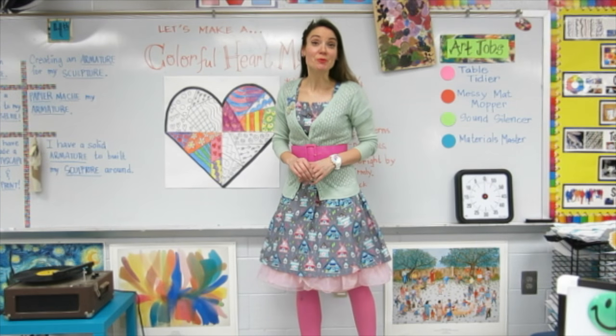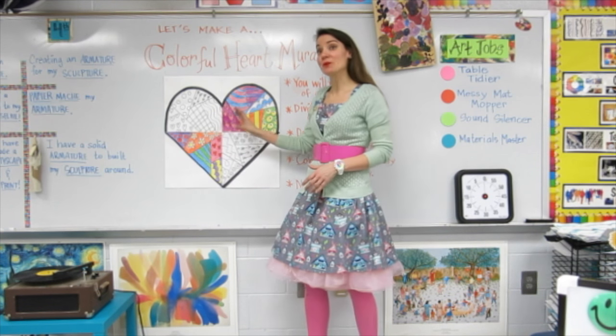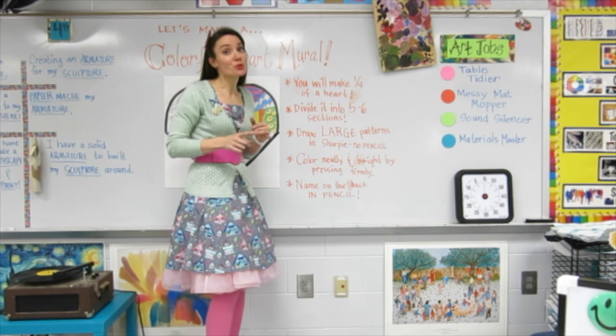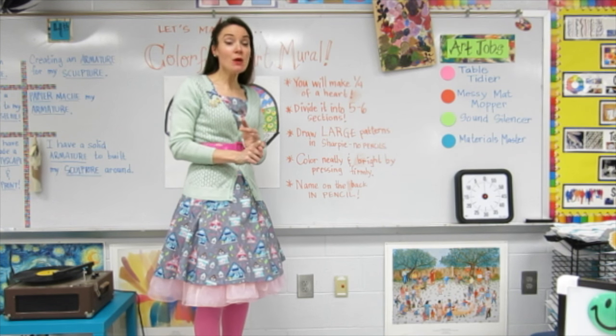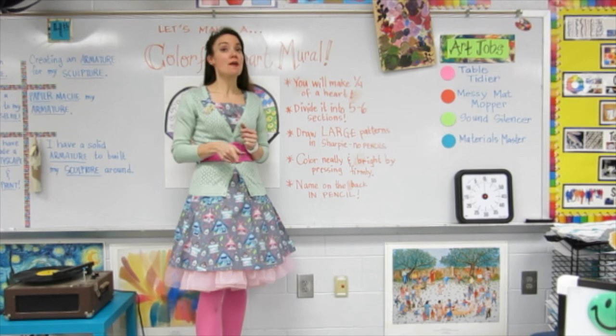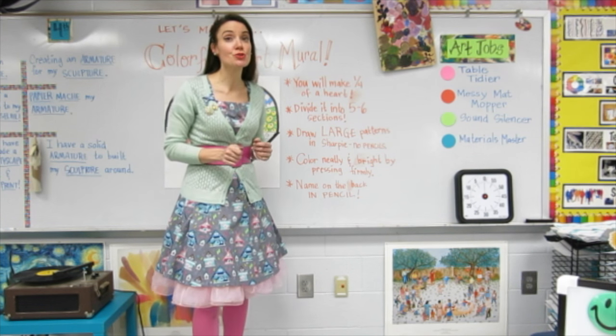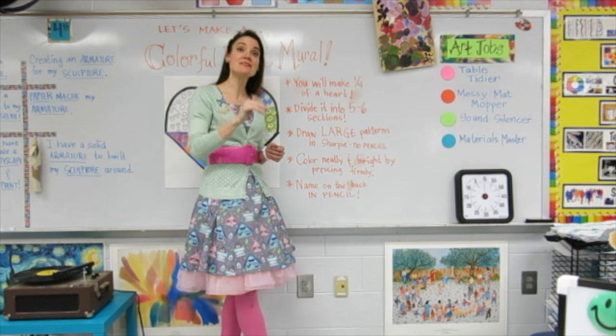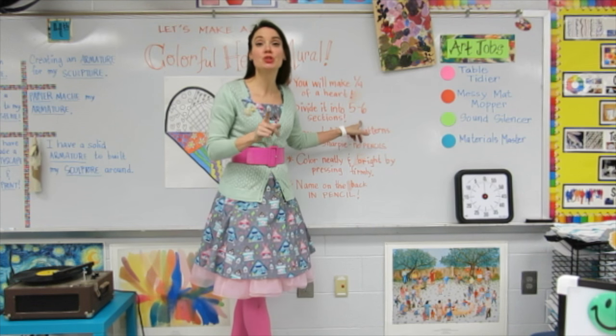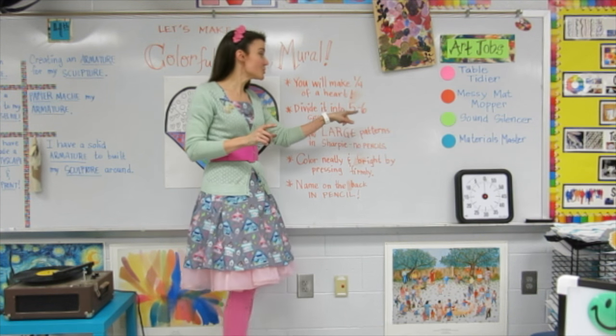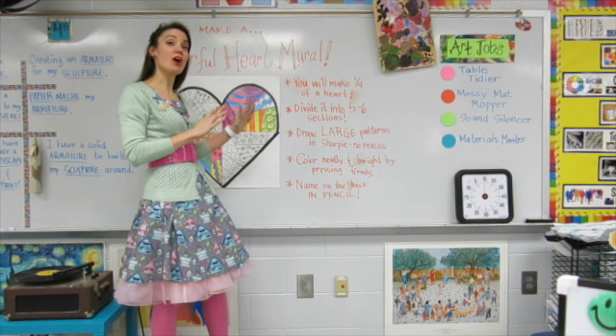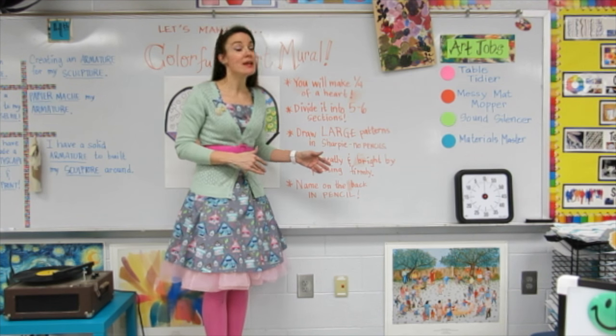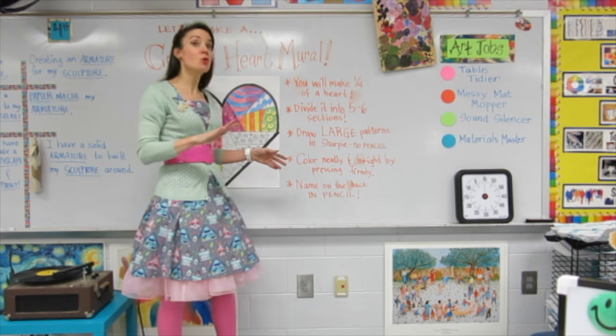So you can see what our mural will look like. I went ahead and I made a couple of sections of my own. So, just to review, you'll need to go shopping at the store for your piece of paper and a Sharpie. When you get to your seat, name and teacher code on the back of your paper, but make sure you do that in pencil. Then, you need to divide the space with five to six lines using your Sharpie, not a pencil. Once you've got your heart sectioned off, then you need to add large patterns inside of each section with your Sharpie. No pencils, please.